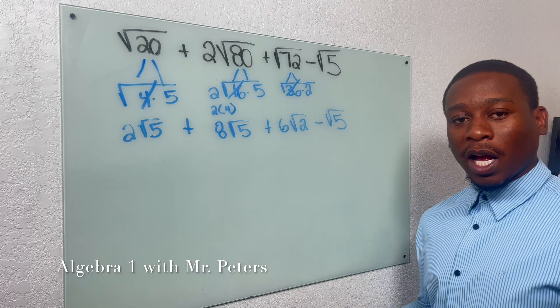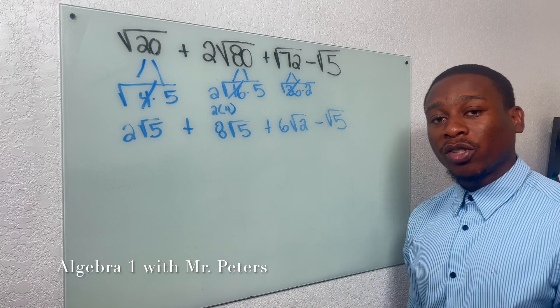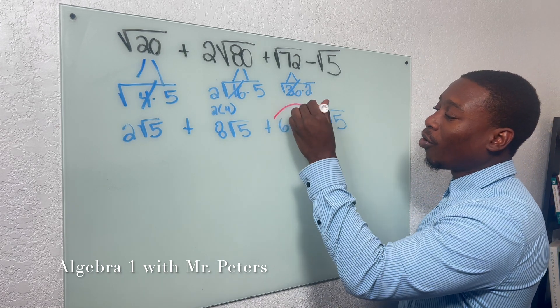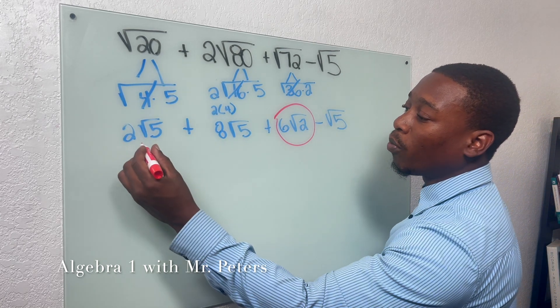Now at this step, guys, we broke everything down. We can't simplify anything anymore. But there's something that we have to understand. So this radical right here, we cannot add to the other 3 because they do not have the same number under the radical.